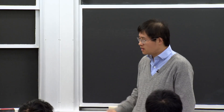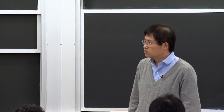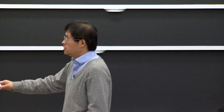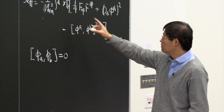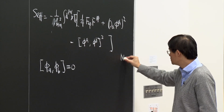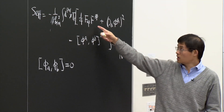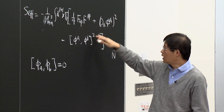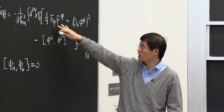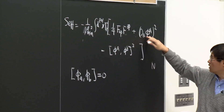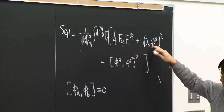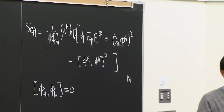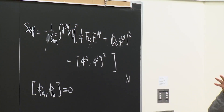Let me say a few more things about that, just to make sure. Here is the action. If you have N D-branes together, this is a low energy effective action for the massless degrees of freedom on the D-brane, which includes a gauge field that is a matrix, and also scalar fields — N by N matrices. The number of scalar fields is the same as the number of transverse dimensions.